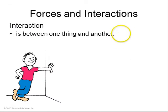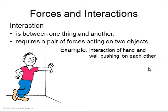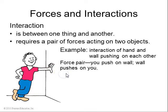So an interaction is between one thing and another. It requires a pair of forces acting on two objects. Example: the hand and the wall are pushing on each other. This is a force pair. You push on the wall, the wall pushes on you. And it turns out that all forces exist in force pairs like this.